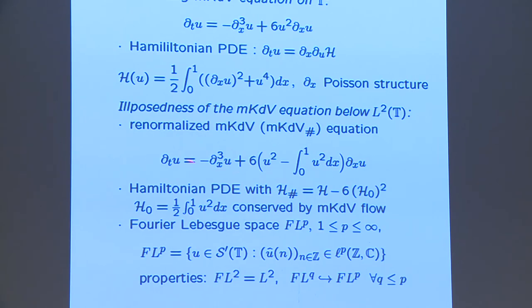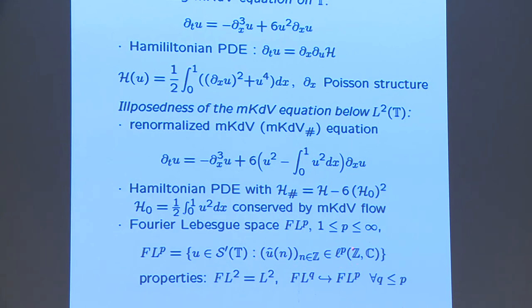For the ill-posedness result of MkdV below L2, I introduce the renormalized MkdV equation, MkdV sharp, obtained from MkdV by replacing u squared by u squared minus the L2 norm. This equation is Hamiltonian with H sharp equal to H minus 6 times H0 squared. I also introduce the Fourier-Lebesgue spaces FLP for P between 1 and infinity: the space of periodic distributions whose sequence of Fourier coefficients is in Lp. For P equals 2, FL2 is just the usual L2 space, but for P strictly bigger than 2 it's a larger space of distributions.